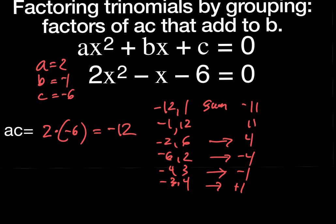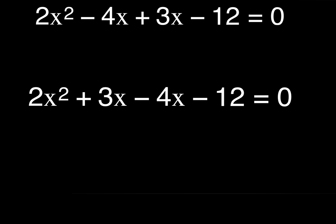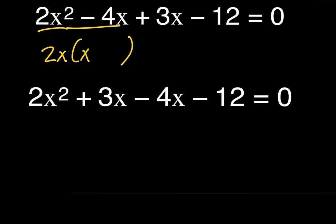That means instead of negative x, I'm going to split it into negative four x plus three x — because negative four x plus three x simplifies back to negative x, which was my original middle term. So I rewrite as 2x squared minus four x plus three x minus six, then factor by grouping. Looking at the first two terms, I can factor out a 2x, leaving x minus two.